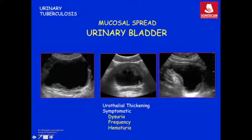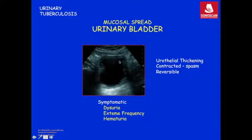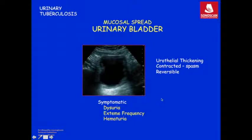Because of bladder involvement, the patient is symptomatic with dysuria, frequency of micturition, and hematuria. Due to urothelial infection and occurrence of granulomas, there is spasm of the detrusor muscle causing contraction of the urinary bladder, which is still reversible with treatment. With this contraction, patients will have extreme frequency of micturition.